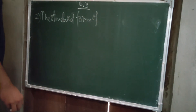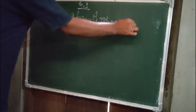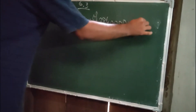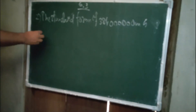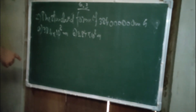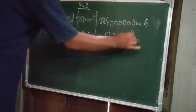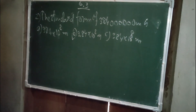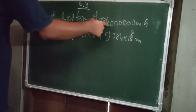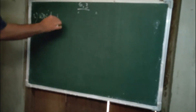The next question: what is the standard form of 384,000,000 meters? Option A is 38.4 into 10 to the power 8 meters, option B is 3.84 into 10 to the power 8 meters, and option C is 384.4 into 10 to the power 8 meters. The answer is option B, because counting the digits — one, two, three, four, five, six, seven, eight — we place the point after the first digit.